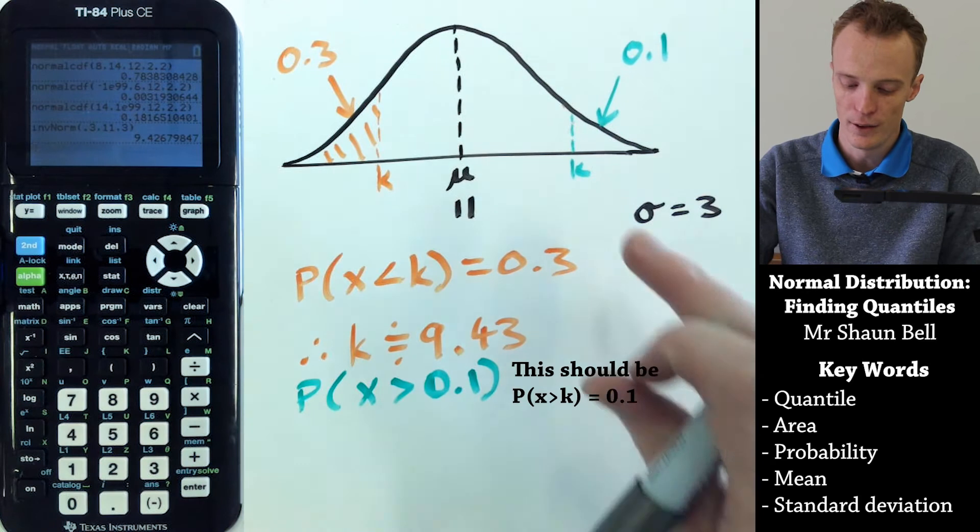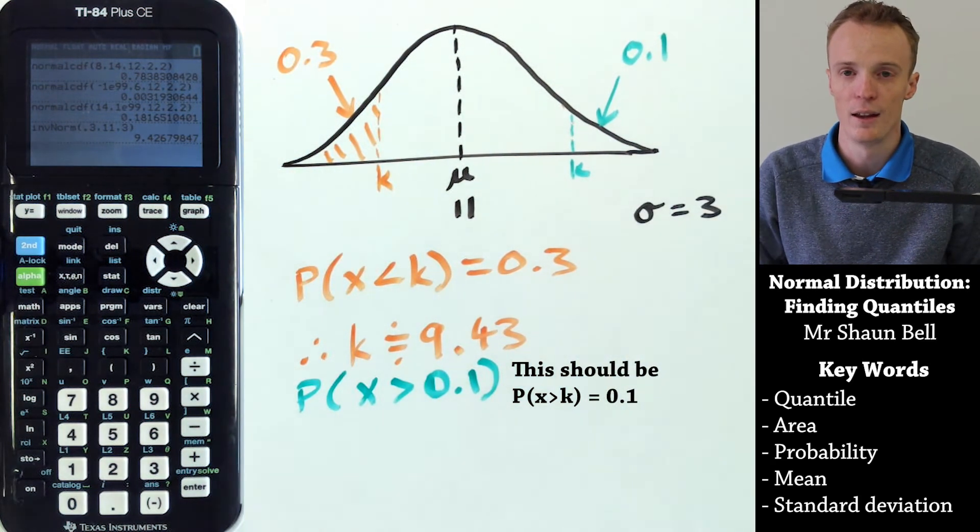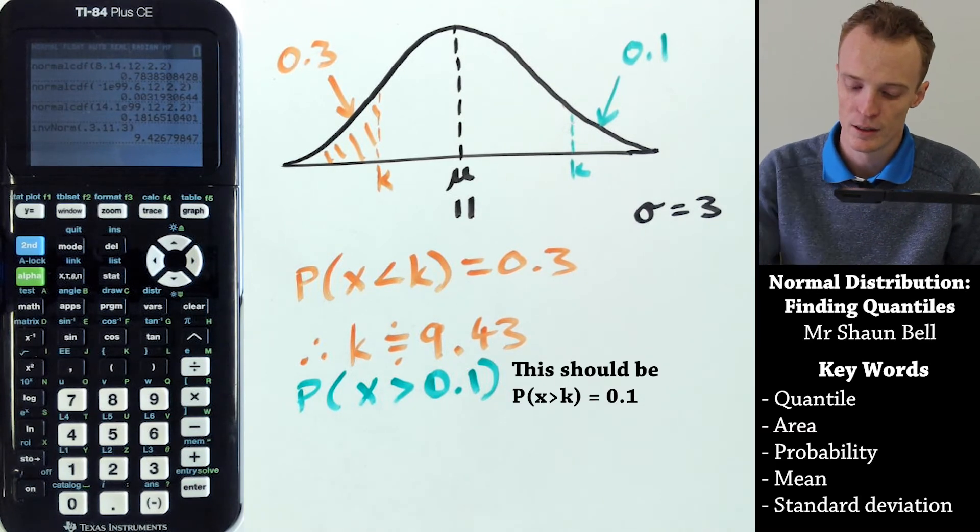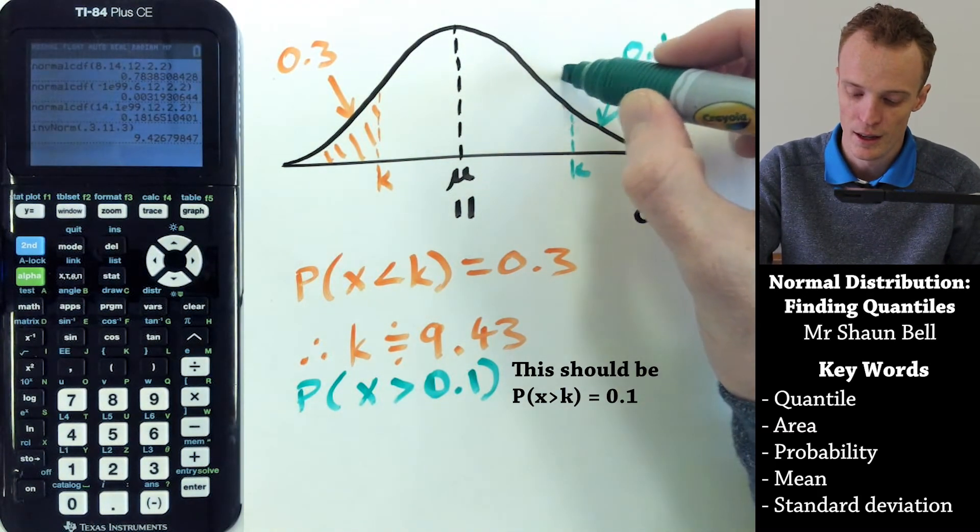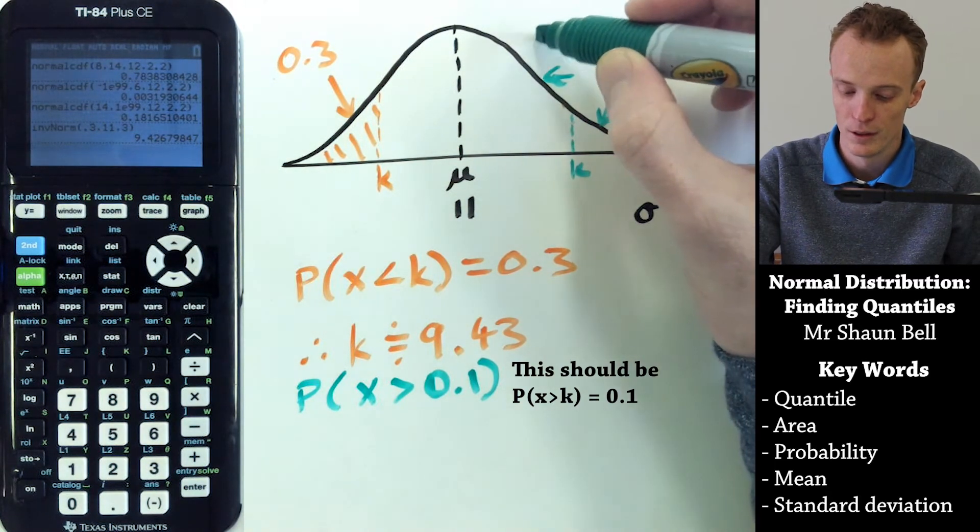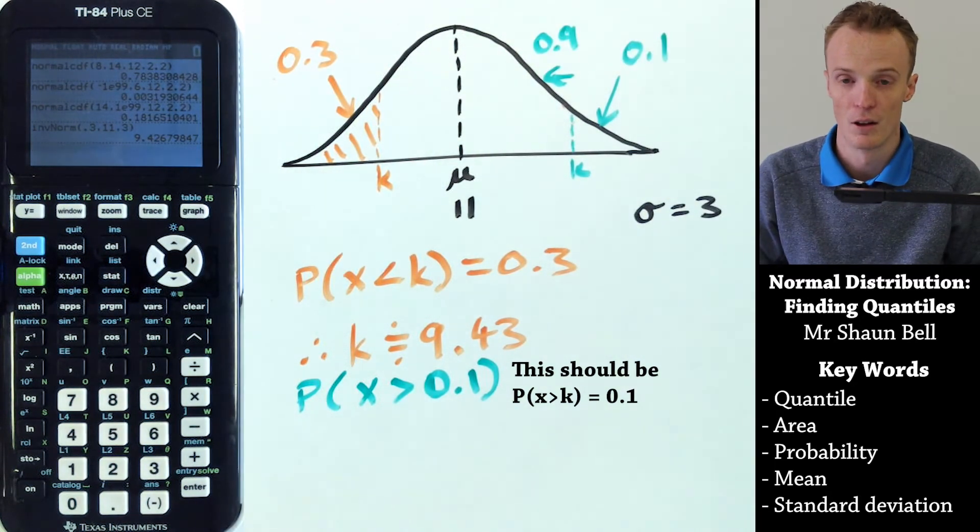So if the area to the right-hand side of K is 10% or 0.1, the area to the left-hand side of K must be 1 minus 0.1, or 0.9, which is 90%.